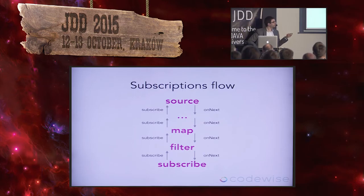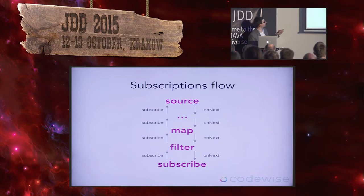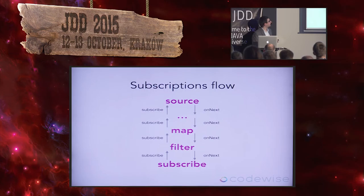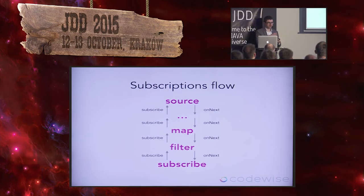Subscribe will call subscribe to filter, filter will call subscribe to map, and so on until we get to the source. The source then decides it has a new subscriber and wants to produce events. If the source was the 'just' operator, it doesn't start any threads — it produces data on the same thread that calls subscribe. The code that implements sending the data is executed by the thread which subscribes to the source.